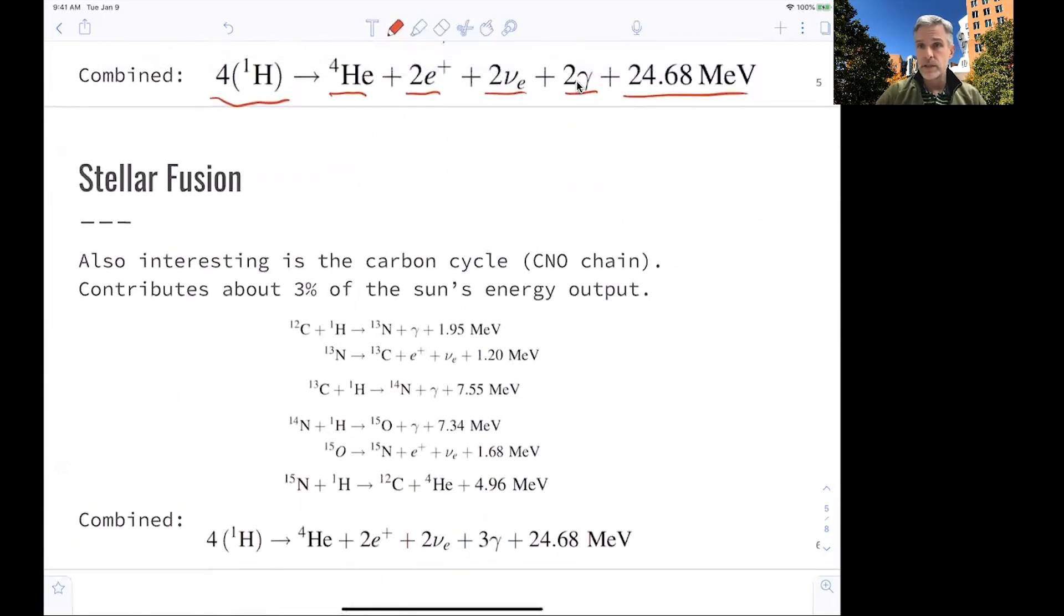This is one and the dominant energy production mechanism within the sun, but it's not the only one. Also quite interesting is the so-called carbon cycle. It's contributing about 3% to the sun's energy output. So here, carbon basically works as a catalyst. You have carbon and a proton producing nitrogen. The nitrogen produces carbon-13, carbon-13 together with a proton nitrogen-14, nitrogen-14 with a proton oxygen-15, and oxygen-15 nitrogen-15. And then last but not least, nitrogen-15 together with a proton produces carbon-12 again and helium.